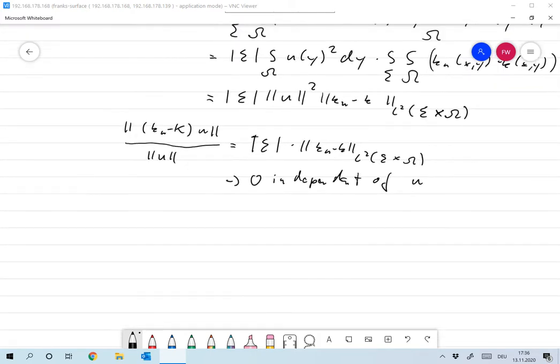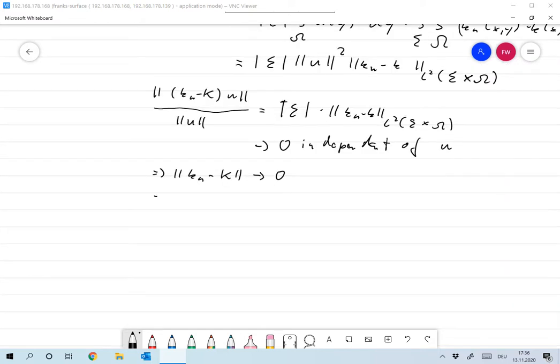So that means that the norm of K_n minus K tends to zero. And since all the K_n's were compact, we find that K is compact as well.